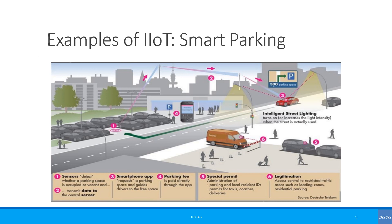Smart parking also reduces congestion, air pollution, and traffic-based accidents. Cities will have a better understanding of whether they need to open more parking options, as they will have data on driving patterns and parking spaces. They can use this information to prepare for big events when more parking is required, resulting in less congestion, fewer accidents, and better emergency response times, making for better city living for all.